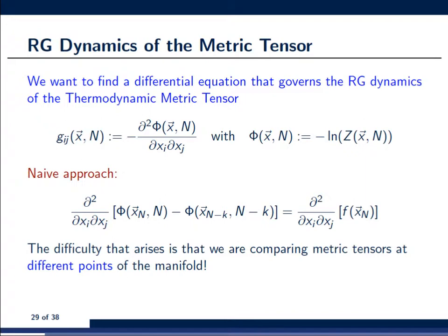But this is, in fact, not as easy as it looks like, and the difficulty here is in the detail. Well, you see, if you look at the right-hand side of this equation, then the first term certainly corresponds to the metric tensor at the point xn, n. However, the second term is a metric tensor that is sort of shifted by an amount n minus k.